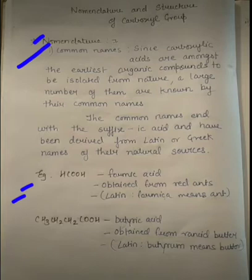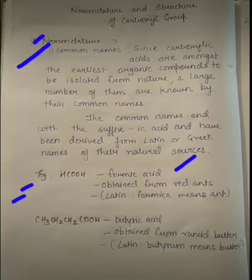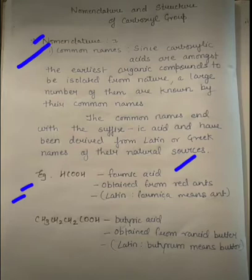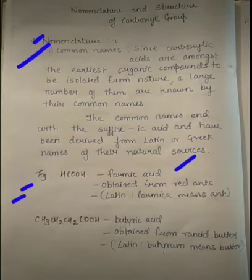HCOOH is commonly known as formic acid. Its source is red ants — they are the source of this acid. If we talk about its origin, it comes from the Latin word 'formica', which means ant. Because of this Latin origin — formica — its name became formic acid.